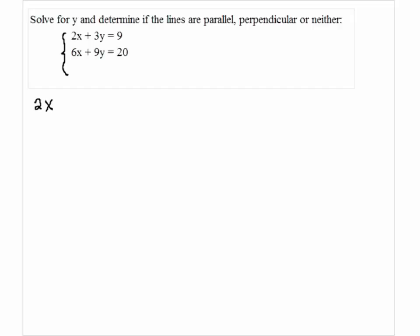First, take a look at the top equation which is 2x plus 3y equals 9. 3y equals negative 2x plus 9. So y equals negative 2 thirds x plus 3.